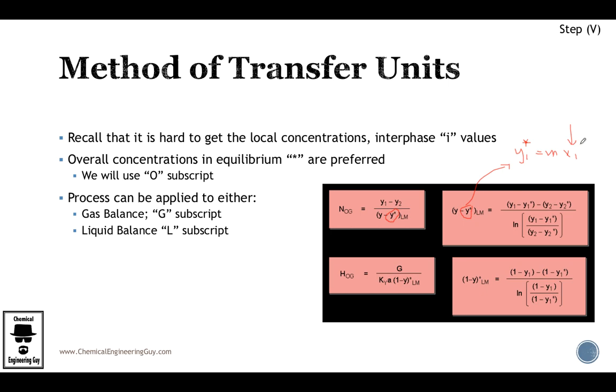If you have x1, which is very likely, and you know the equilibrium relationship, you can get y1. So y1 asterisk and y2 asterisk can be calculated. Y1 and y2 are given, so as you can see, NOG is pretty easy to get compared to NLG.